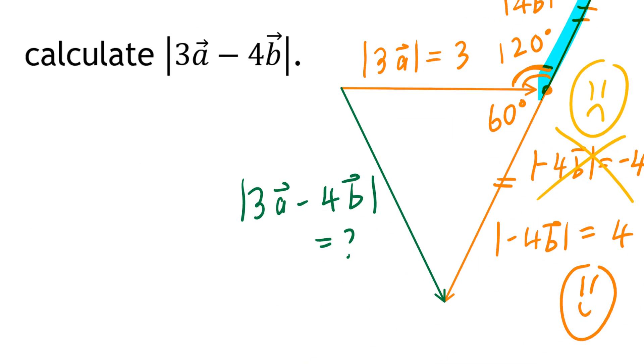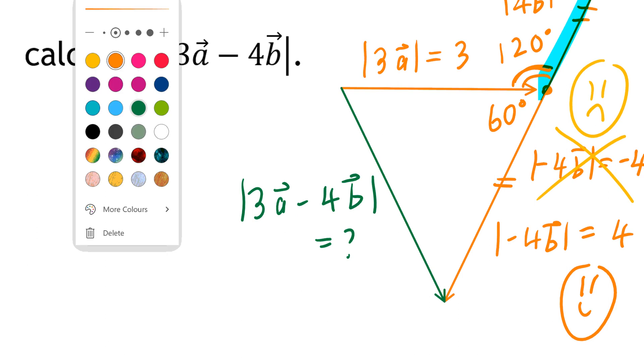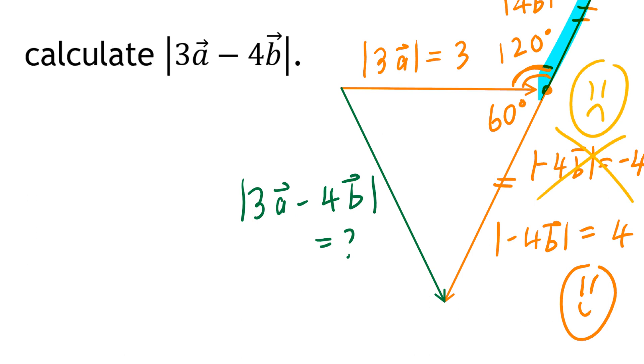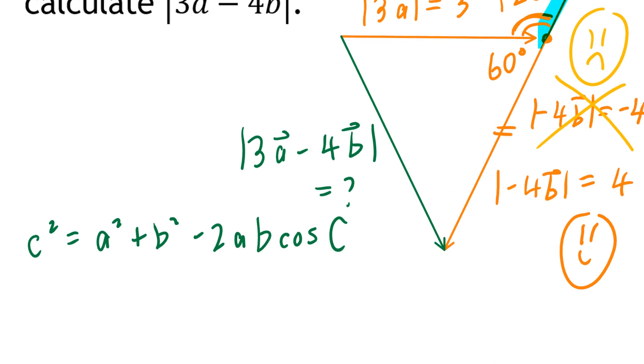We're going to calculate the magnitude by applying the cosine law. In case you forgot the cosine law, c square equals a square plus b square minus 2ab cosine c. And make sure your calculator is turned on, you press clear, and you're in degree mode.